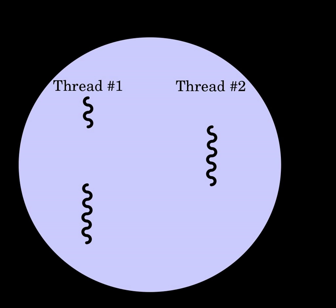Fibers are an even lighter unit of scheduling which are cooperatively scheduled. A running fiber must explicitly yield to allow another fiber to run, which makes their implementation much easier than kernel or user threads. A fiber can be scheduled to run in any thread in the same process, permitting applications to gain performance improvements by managing scheduling themselves instead of relying on the kernel scheduler. Parallel programming environments such as OpenMP typically implement their tasks through fibers. Closely related to fibers are coroutines, with the distinction being that coroutines are a language-level construct while fibers are a system-level construct.